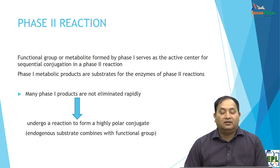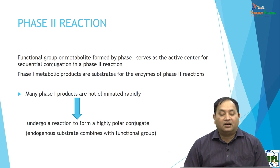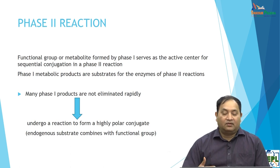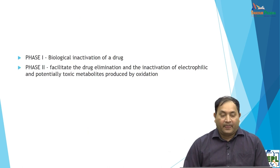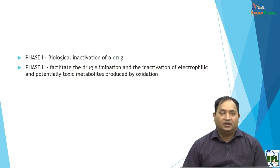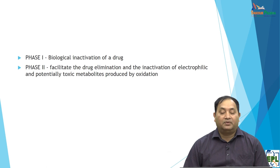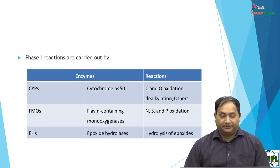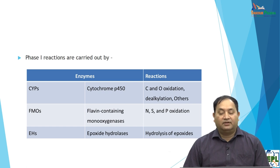Phase 1 metabolic products act as substrates for enzymes in Phase 2 reactions. Many Phase 1 products that are not eliminated rapidly gradually undergo further reaction, forming highly polar conjugates. These polar conjugates act as endogenous substrates combined with functional groups. Phase 1 is the biological inactivation of the drug — all pharmacological action becomes inactive. Phase 2 facilitates drug elimination from the body and is part of the inactivation process, producing electrophilic and potentially toxic metabolites during oxidation.